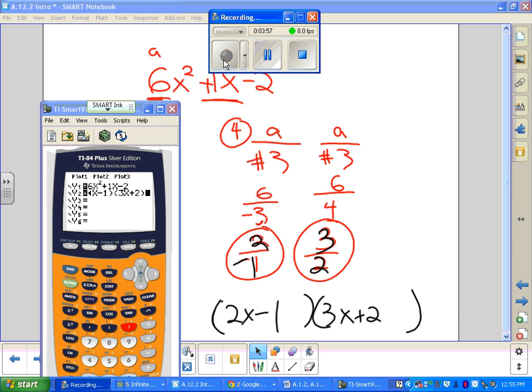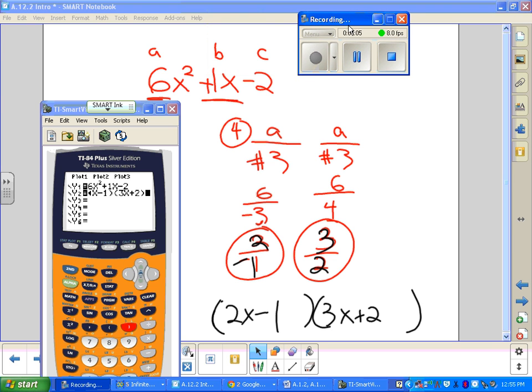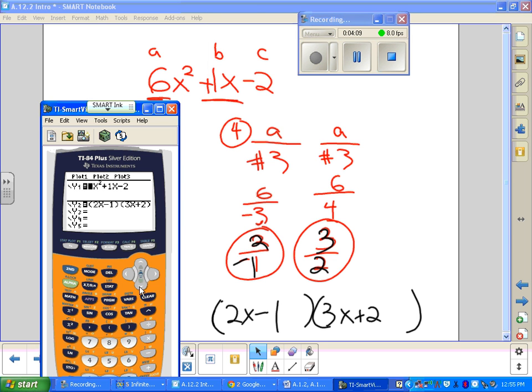And if I wanted to check this problem, in y1 I'd put my original polynomial, which is 6x squared plus 1x minus 2, which is up in y1. And in y2 I'd put my factored answer, which I said is 2x minus 1 times 3x plus 2. And then when I graph it, if I get one quadratic,